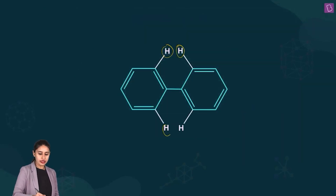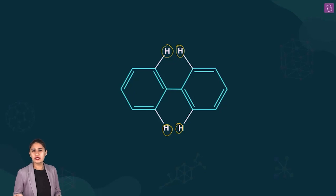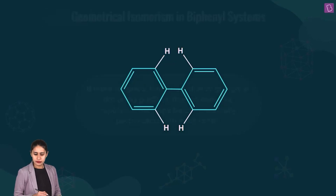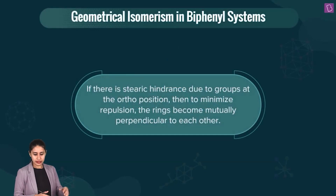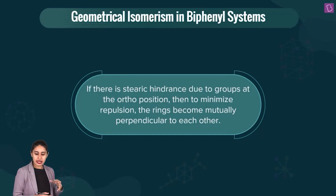We have two hydrogens here and here. There is no possibility of cis and trans isomerism here. But let's take it further. If there is steric hindrance due to groups at the ortho position, then to minimize repulsion, the rings become mutually perpendicular to each other.